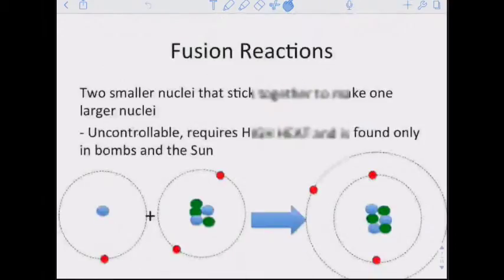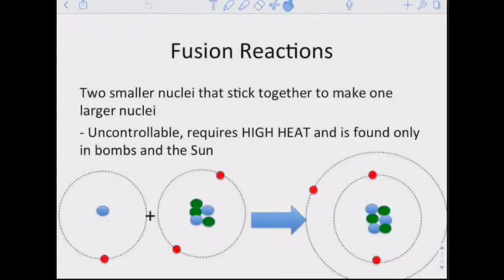A fusion reaction, on the other hand, takes two smaller nuclei that fit together to make one larger nucleus. It's uncontrollable, requires high heat, and is found only in bombs, hydrogen bombs, and the sun. The biggest difference between fusion and fission is that fission is big going smaller, while fusion is something relatively small going just a little bit bigger. Fusion reactions are much, much greater in energy, in the release of energy, than fission.